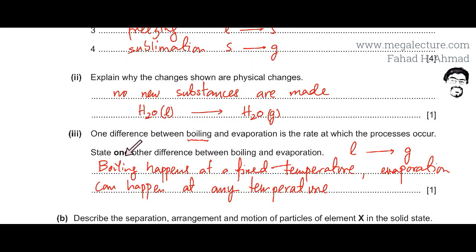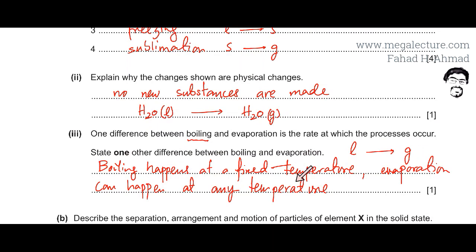One major difference is that boiling always happens at a fixed temperature — for example, water always boils at 100 degrees centigrade. Evaporation, on the other hand, can happen at any temperature. If you leave a glass of water out, it will evaporate even at room temperature, so no fixed temperature is required for evaporation to occur.